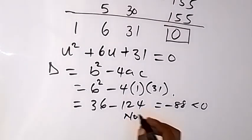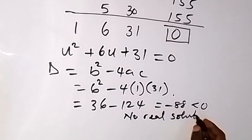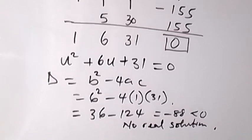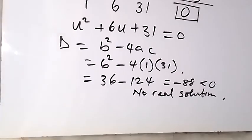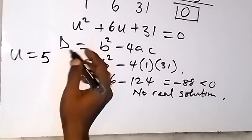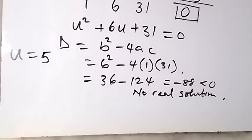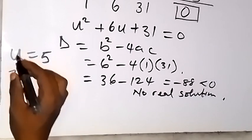There is no real solution from this quadratic equation. That means u equals 5 will be the solution we have. Remember that our u is represented as 7 raised to power x, and 7 raised to power x equals 5.